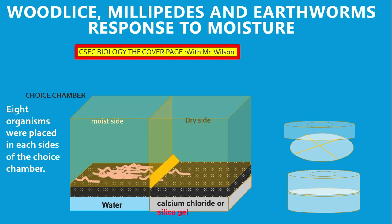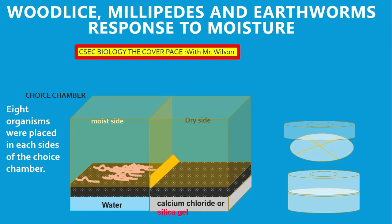It's very important that you are observing the experiment. We had pretty much almost the same number of organisms on the moist side as we had on the dry side, and what we observe is that there is a mass movement from one side to another. Make sure that you would have observed that.